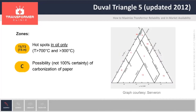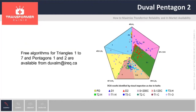Triangle 5 allows distinguishing between high temperature faults in oil only, of lesser concern, and those with possible carbonization of paper C, potentially more dangerous. Triangle 5 uses methane, ethylene, and ethane — the so-called high temperature gases, or hot metal gases. Pentagon 2 allows identification of the three basic electrical faults PD, D1, D2, and the three subtypes of thermal faults S, O, T3 in oil or T3H, and C. Pentagon 2 uses the same five gases as Pentagon 1.